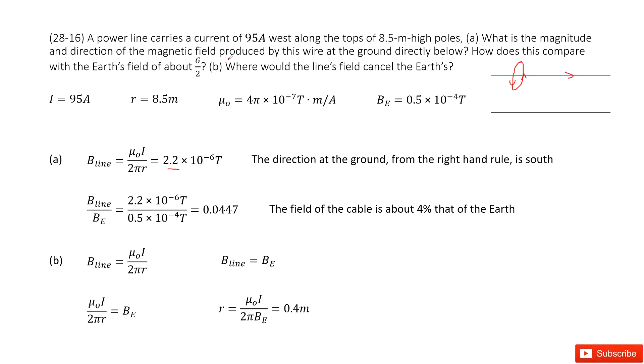And now compare with Earth's magnetic field. So comparing with magnetic field using the B line divided by B_E, you will get it around 4% of Earth's magnetic field.